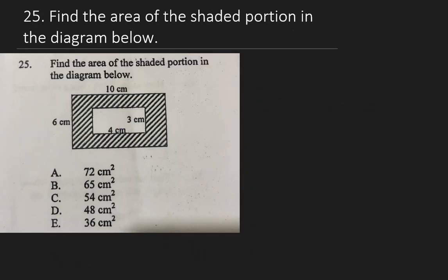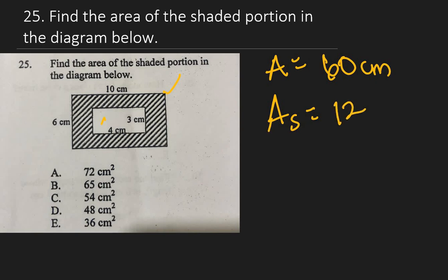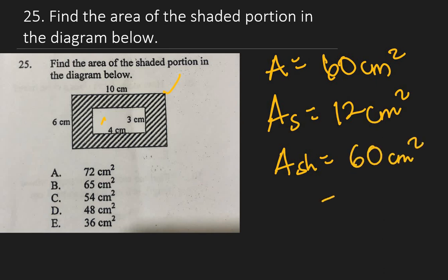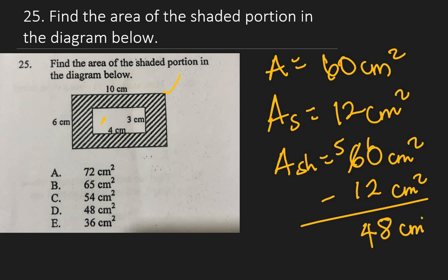Question 25: Find the area of the shaded portion in the diagram. There are two rectangles — a larger outer one and a smaller inner one. Area of outer rectangle = 10 × 6 = 60 cm². Area of inner rectangle = 3 × 4 = 12 cm². Shaded area = 60 − 12 = 48 cm². The right answer is D: 48 cm².